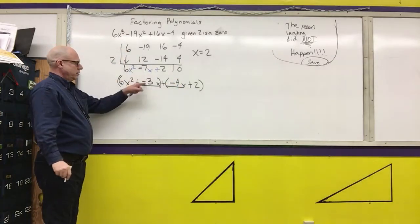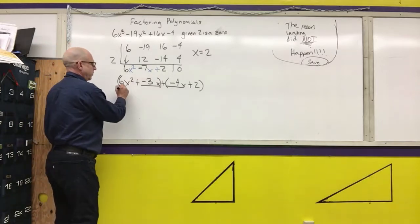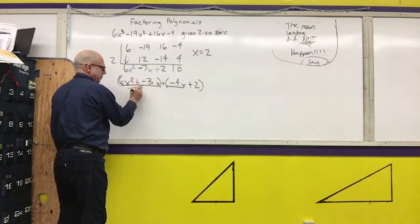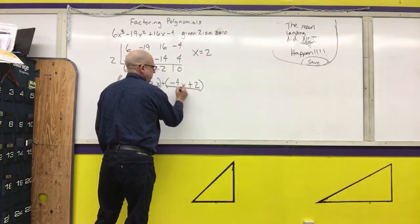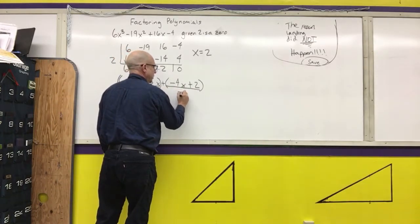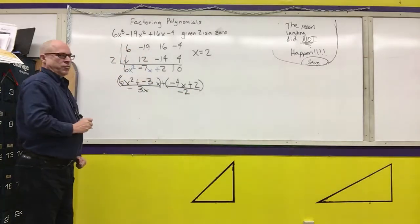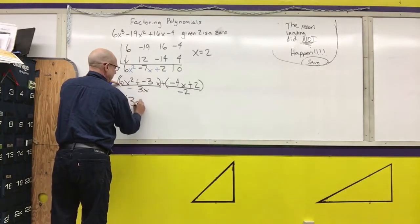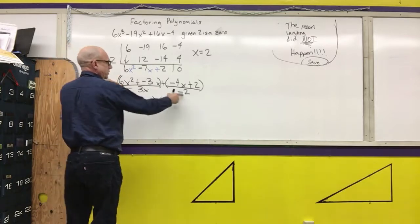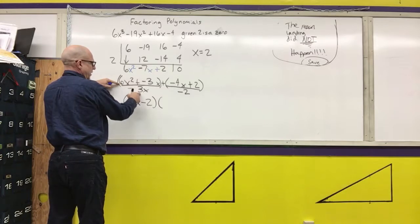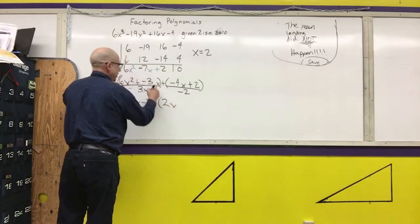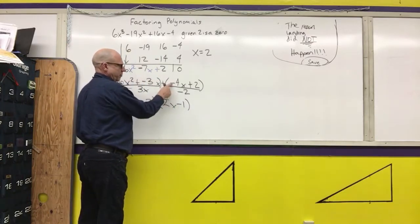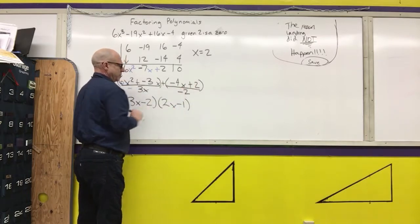Now I'm going to factor out the greatest common factor of each term. The greatest common factor in the first set here is 3x. Greatest common factor out of the last group is negative 2. And now I'm going to write my two factors. The first factor is 3x minus 2. The second factor is 2x minus 1. I'm going to check the work to make sure I still get this answer. Negative 4x divided by negative 2 is 2x. 2 divided by negative 2 is, in fact, negative 1.